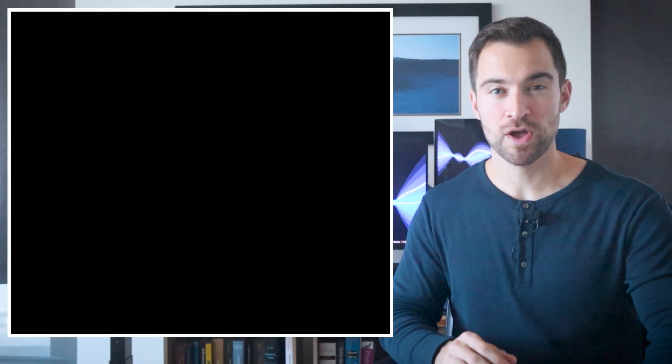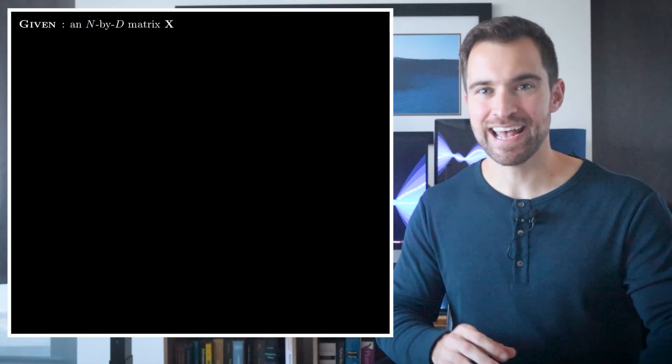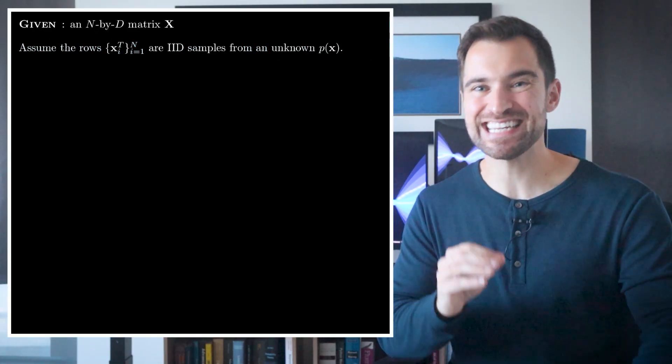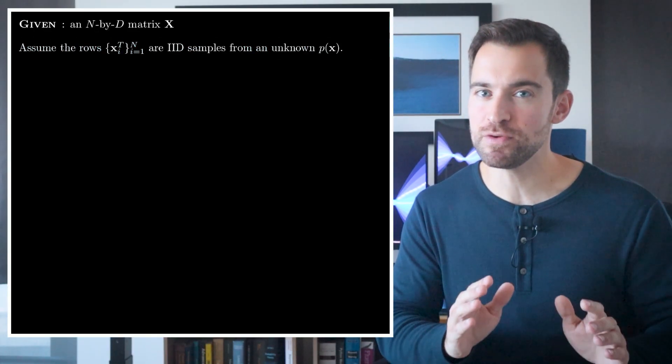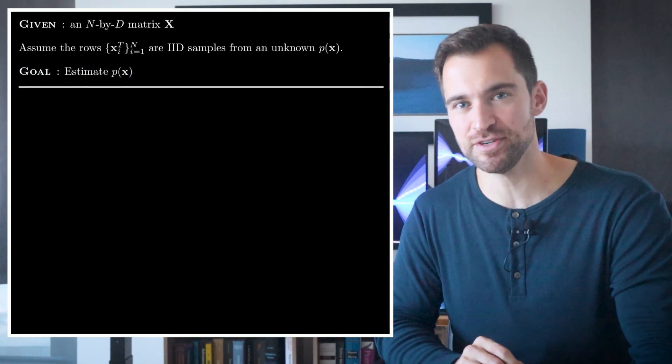To start, I'll describe the data we're given and the problem we face. We are given an X matrix with N rows and D columns. We will assume each row is an independent sample from some unknown distribution P of X. The goal is to estimate that distribution.